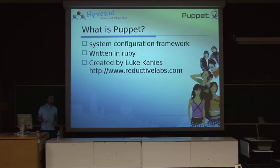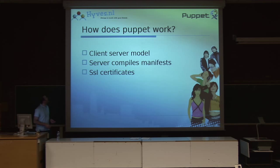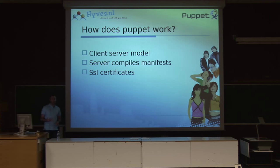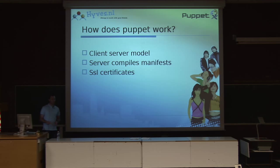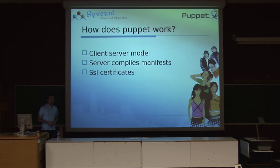Much of the deeper info is available at Reductive Labs. I don't have the time to go into depth, so I just want to show you how Puppet works. It's a client-server model. You have a central server where all your Puppet code lives, which you write, and all the clients connect to it. The server compiles your manifest, makes sure it's unique for your host, and then the client receives it, executes it, and makes sure it runs properly. To ensure you're speaking to the right servers — some people are concerned about security or want to run Puppet over the public internet — it uses SSL certificates, so you can make sure you're connecting to the right host.